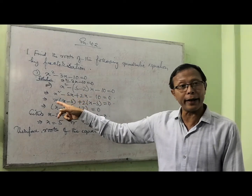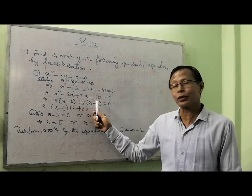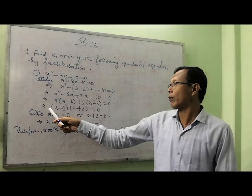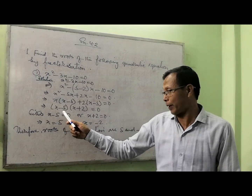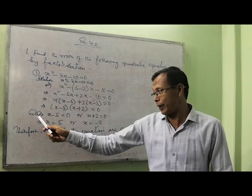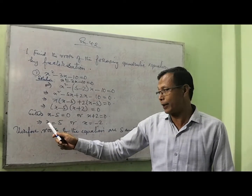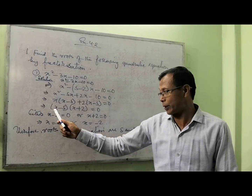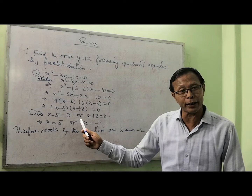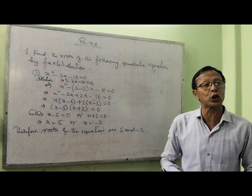From the first two terms I am taking x common, so within the bracket it becomes x minus 5. From the next two terms I am taking 2 common, so within the bracket it becomes x minus 5, equal to 0. So the answer comes out as (x minus 5)(x plus 2) equal to 0. Either x minus 5 equal to 0, giving x equal to 5, or x plus 2 equal to 0, giving x equal to minus 2. Therefore the roots of the quadratic equation are 5 and minus 2.